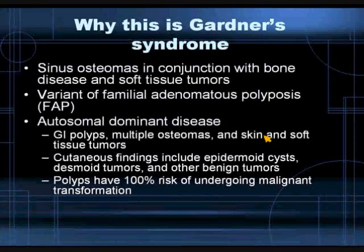Gardner's syndrome represents a variant of familial adenomatous polyposis. It is autosomal dominant. These patients present with GI polyps, multiple osteomas, and skin and soft tissue tumors — or classically desmoid tumors. The cutaneous findings include multiple epidermoid cysts, multiple desmoid tumors, and very often other benign soft tissue lesions.